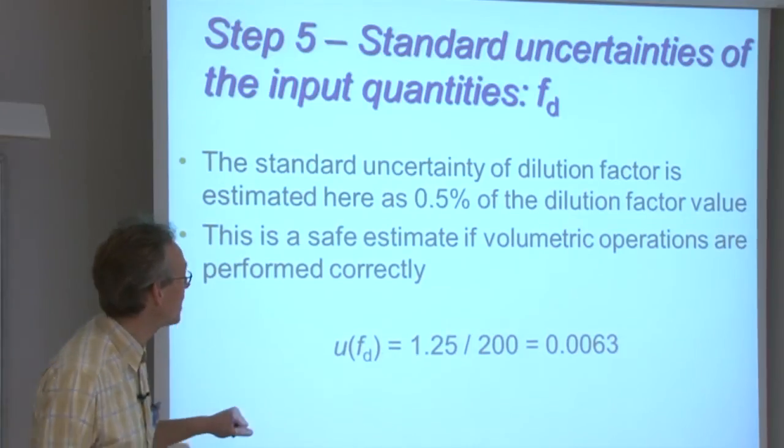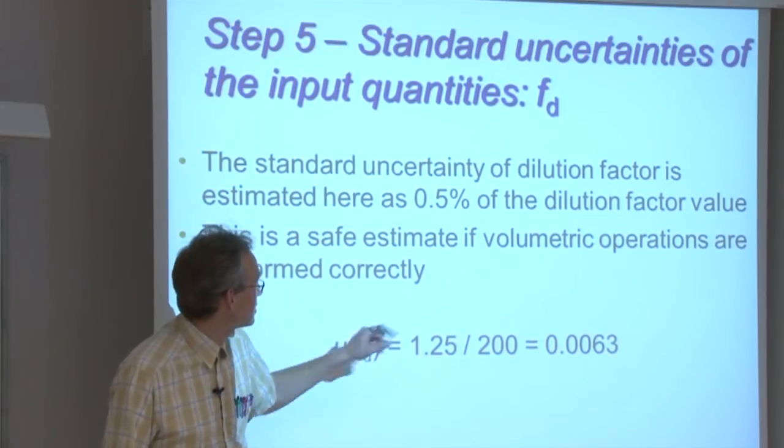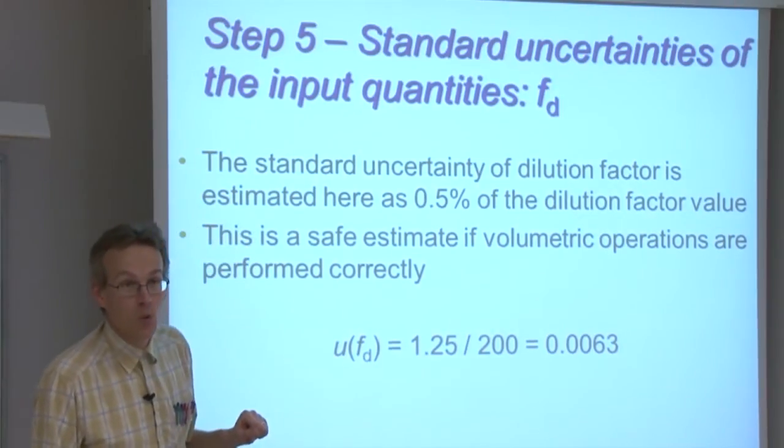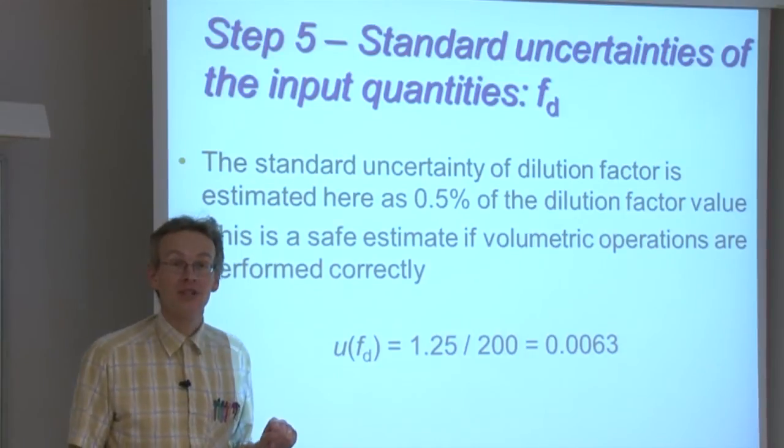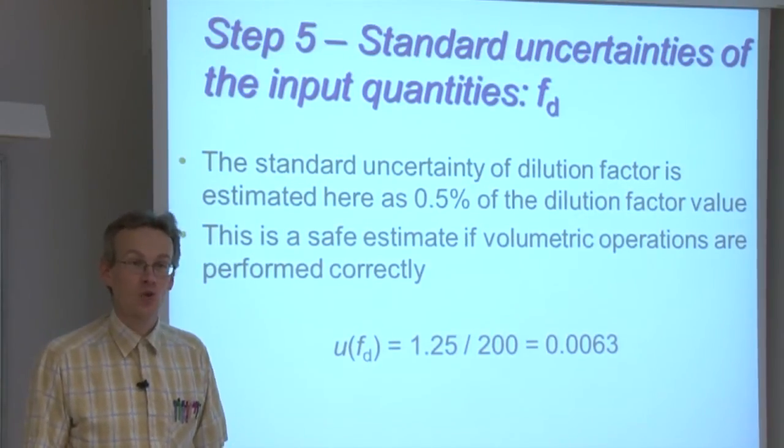We estimate the standard uncertainty of dilution factor as 0.5% of the dilution factor value. According to experience from our laboratory, this is almost always a very suitable uncertainty estimate if volumetric operations are performed correctly. So the dilution factor standard uncertainty will be 0.0063, a unitless quantity.